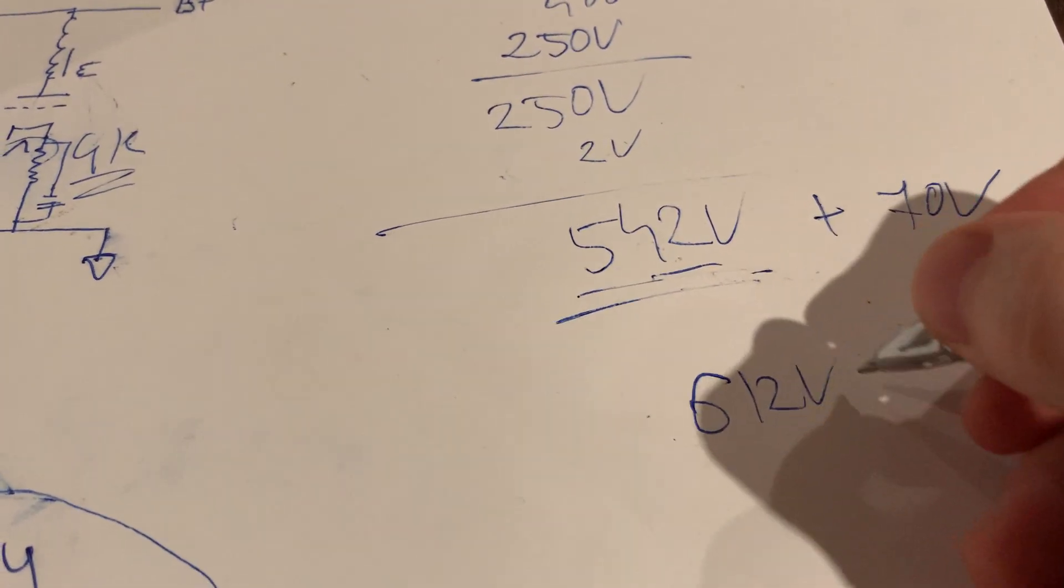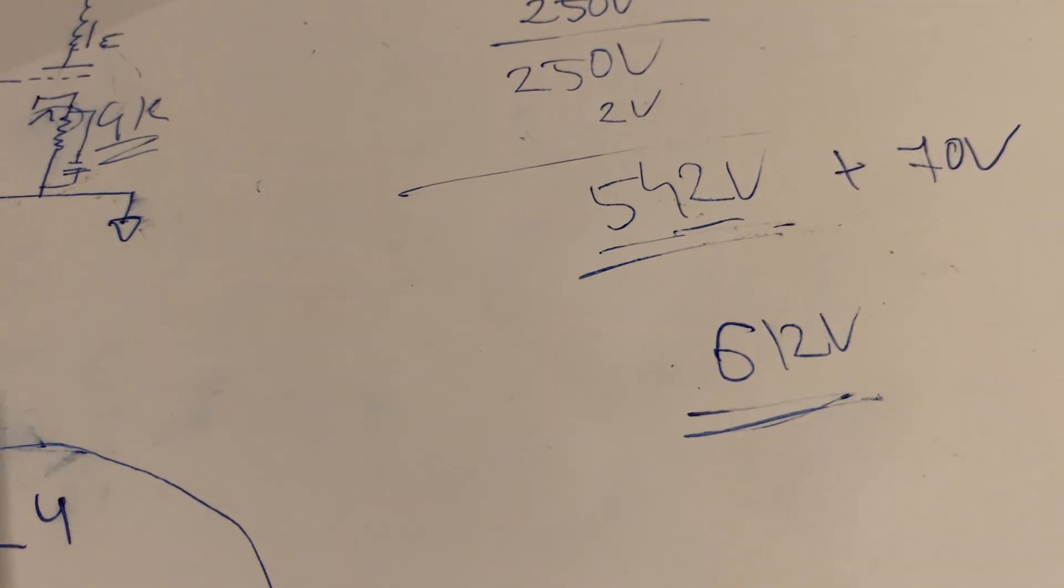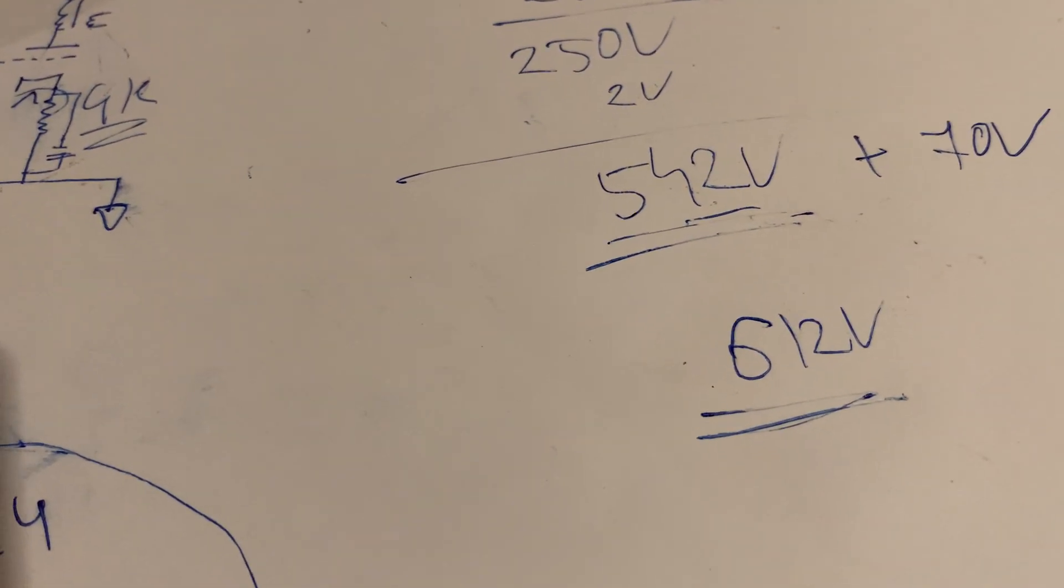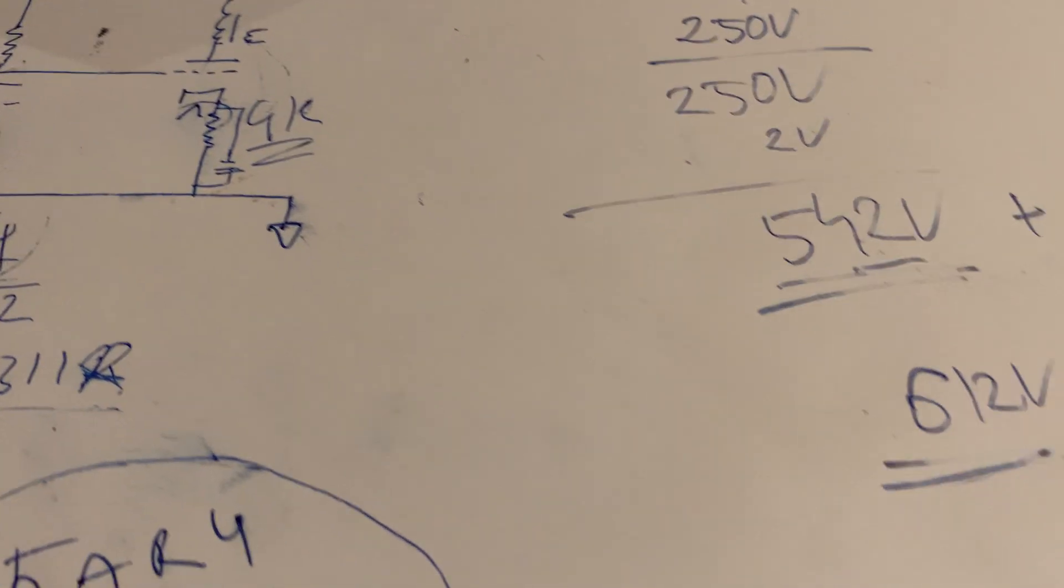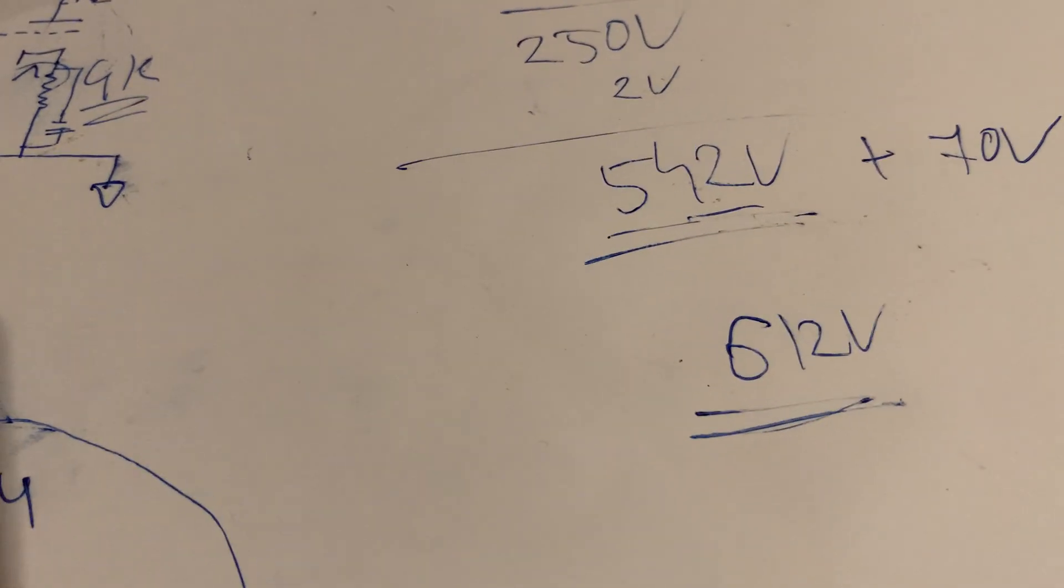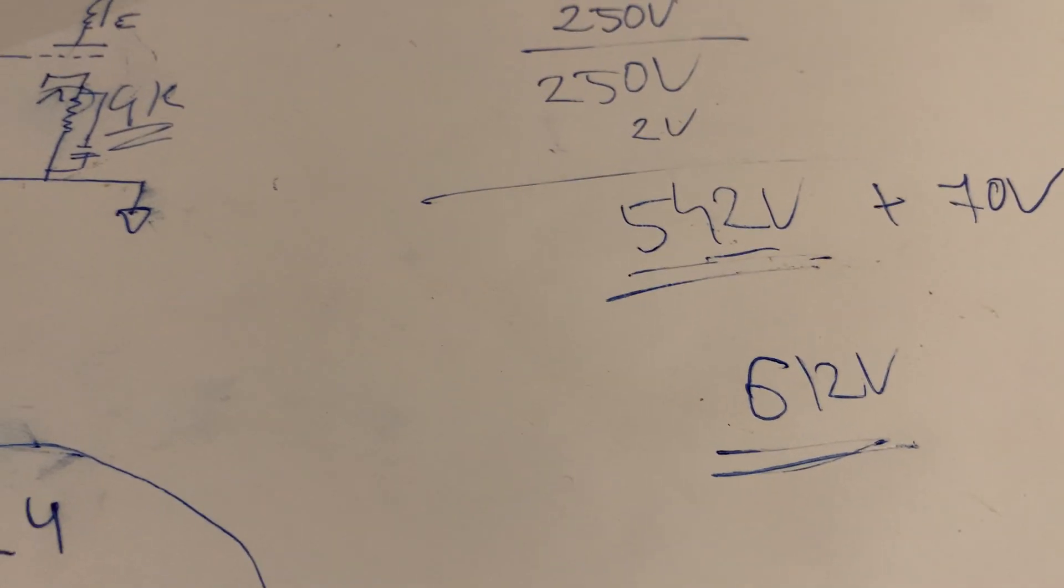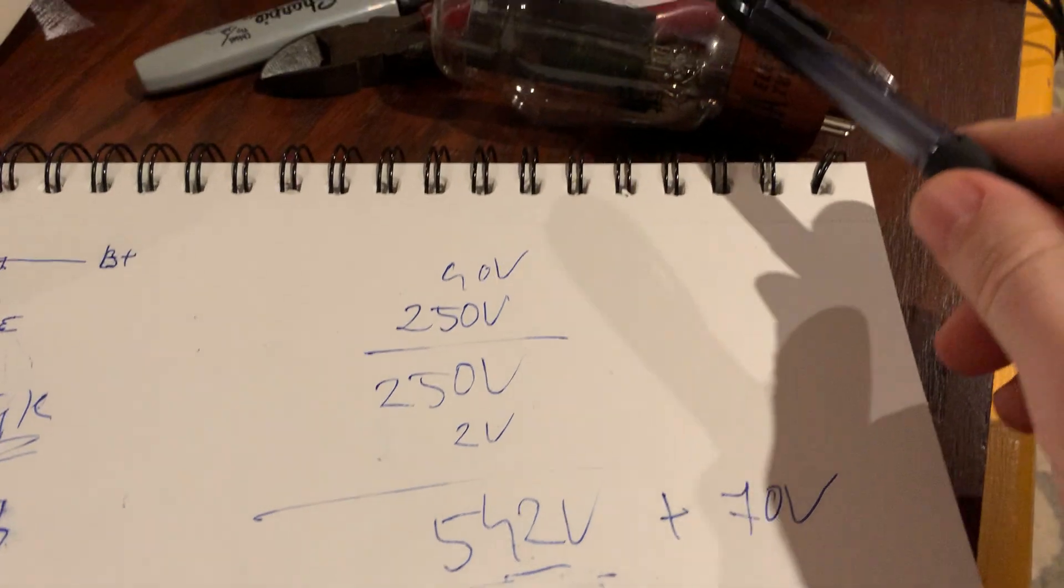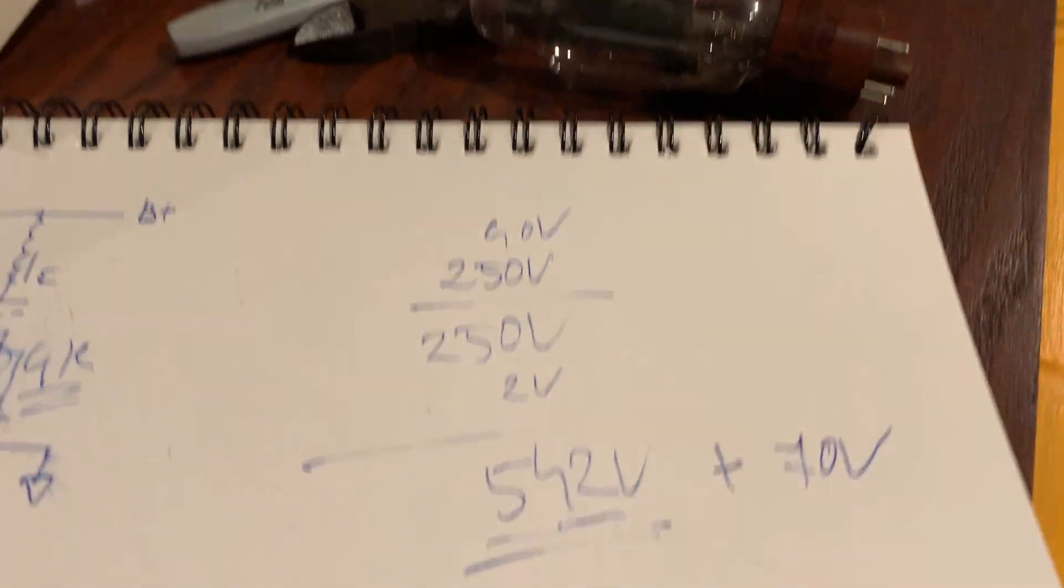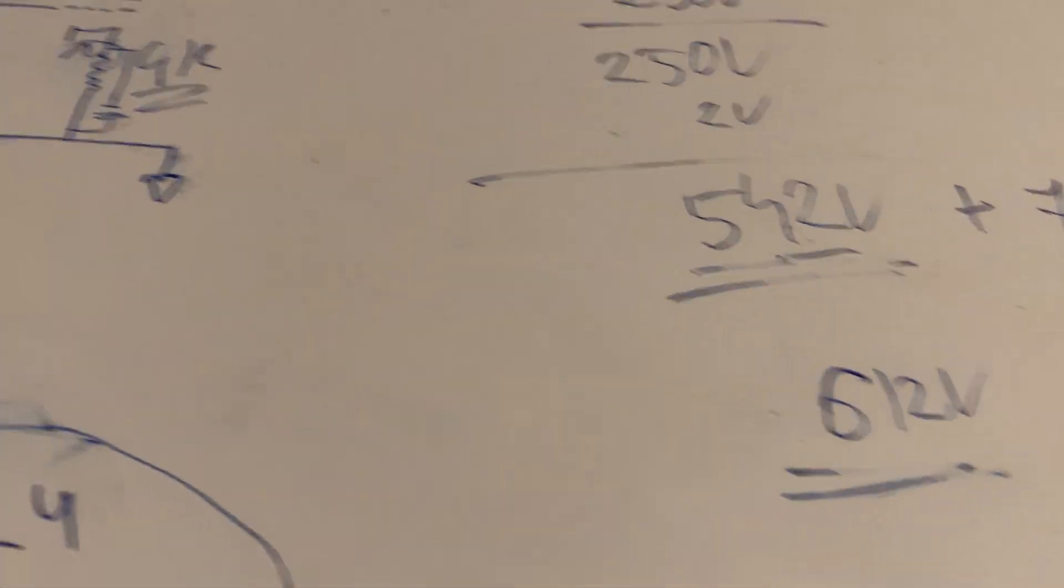Then we have a 612 volts supply that's required to feed your 2 watts per channel baby amplifier. However, in this scenario this tube, this rectifier, really wakes up and really shines.